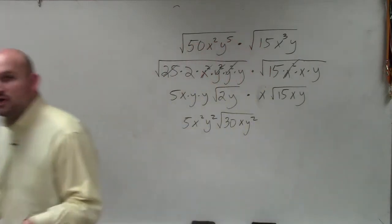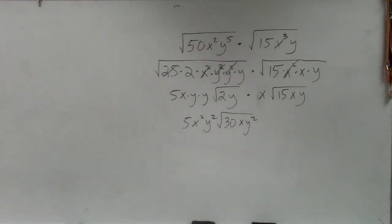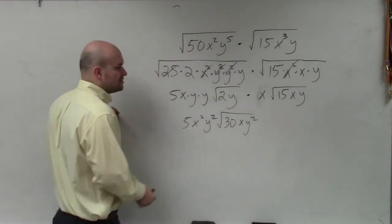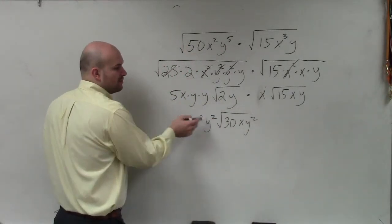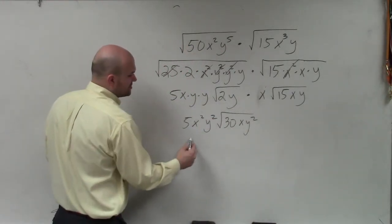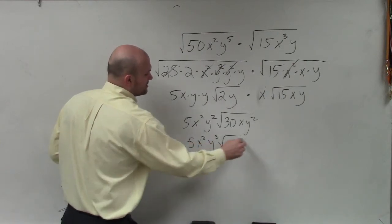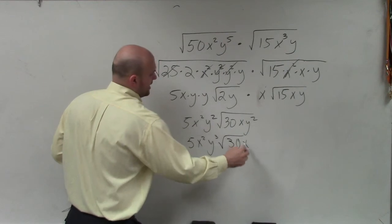Now, once I've multiplied it, I still want to go back and say, hey, is there anything else I can still simplify? Can I still simplify this in any way? Well, the square root of 30, is there any number that divides into 30 that you can take the square root of? Unfortunately, no. However, I can take the square root of y squared, which is just going to be y. So that'd be y times y squared, which is y cubed. So your final answer is 5x squared y cubed times the square root of 30x.